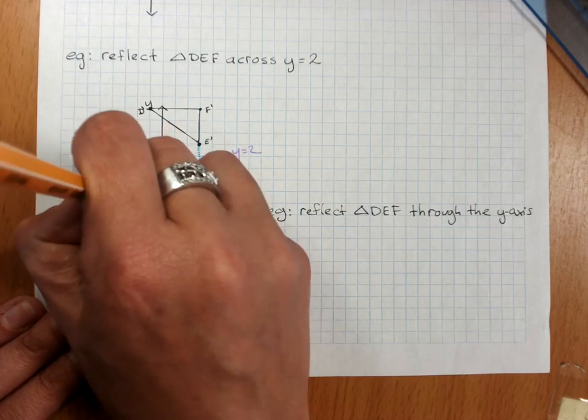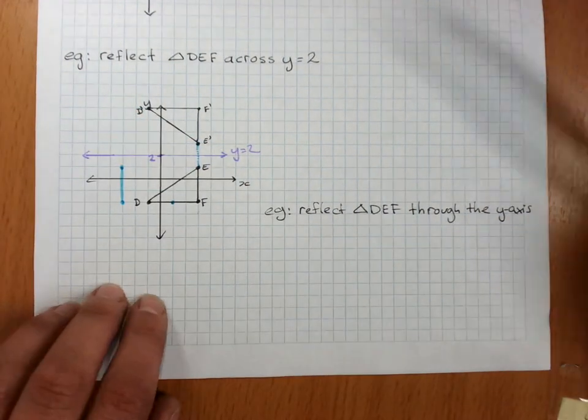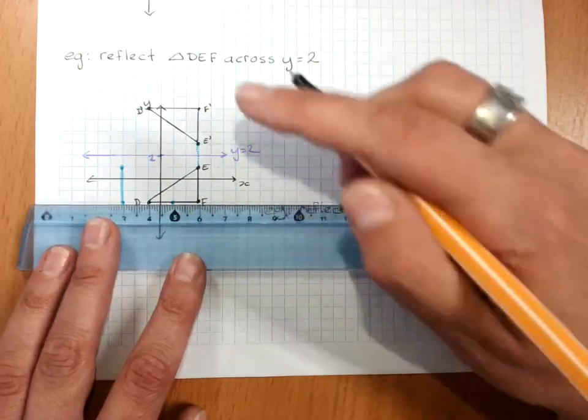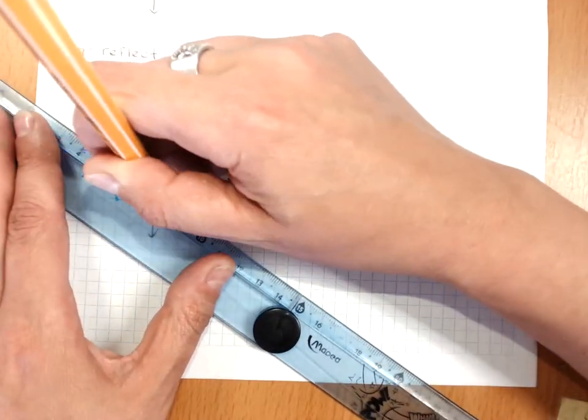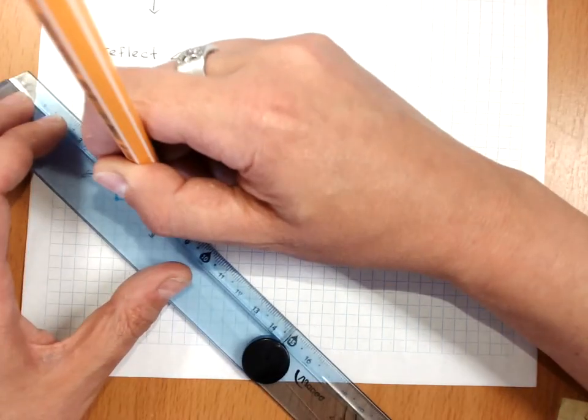So you can see that if we were reflecting when the shape is crossing the mirror, the axis of reflection, we'll end up with our shapes.